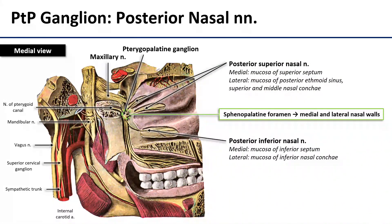Also passing through that sphenopalatine foramen, we have the posterior nasal nerves — a superior and an inferior. As these superior and inferior posterior nasal nerves come through the sphenopalatine foramen, they each split into two branches: one branch goes medially to the septum, and one goes laterally to the lateral wall of the nasal cavity. The inferior innervates the inferior septum and lateral walls, while the superior innervates the superior septum and lateral walls, including the superior and middle nasal conchae and the ethmoid sinus.